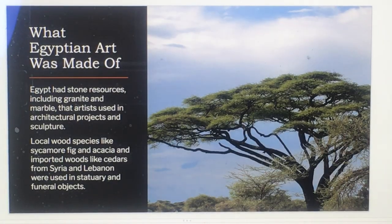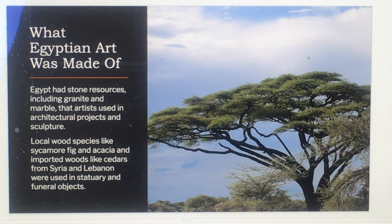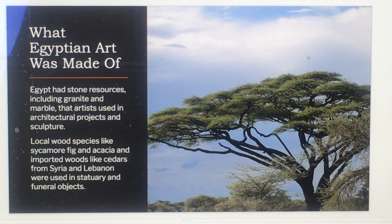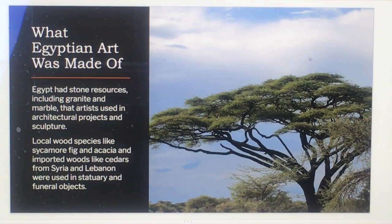Egyptian art was made mostly from stone resources including granite and marble, used in architectural projects and sculpture. Local wood species such as sycamore, fig, and acacia were also used, as well as imported woods like cedar from Syria and Lebanon, used in statuary and funerary objects.